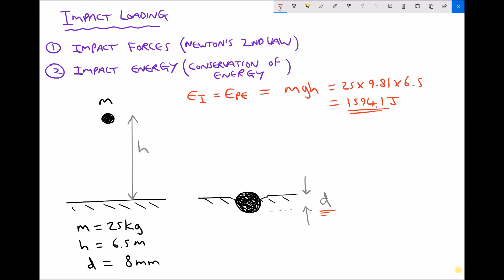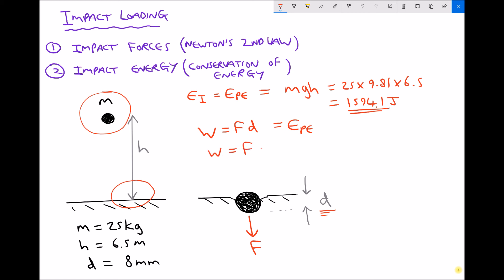The impact energy results in work being done on the surface. As the object strikes the surface it does work to deform it — a force acting downwards causes a deflection d, and force times distance equals work. So the potential energy contained in the mass becomes the impact energy, which then does work to deform the surface. Therefore, work done equals force times deflection distance, which equals 1594.1 joules.